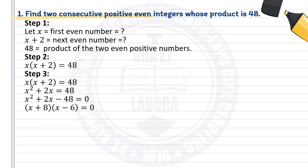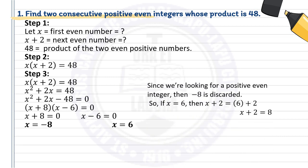Next, factor. The factors of x squared plus 2x minus 48 equals 0 are (x + 8)(x − 6) equals 0. Apply the zero factor property: x plus 8 equals 0 and x minus 6 equals 0. Simplifying, x equals negative 8 or x equals 6. Since we are looking for positive even integers, negative 8 will be discarded. So, using x equals 6, then x plus 2 equals 6 plus 2, which is 8.